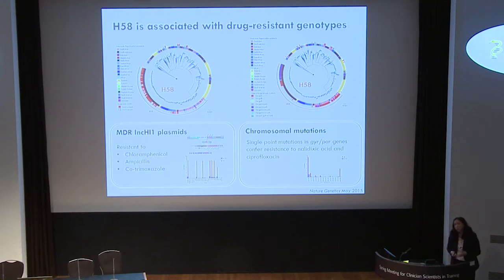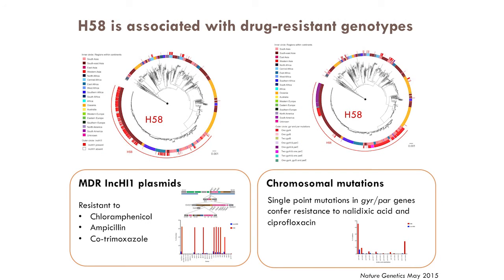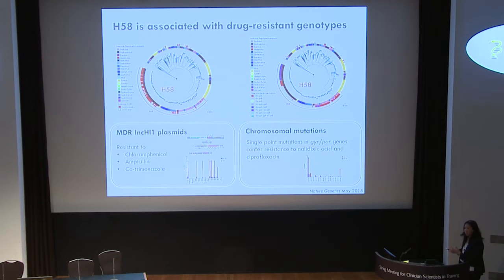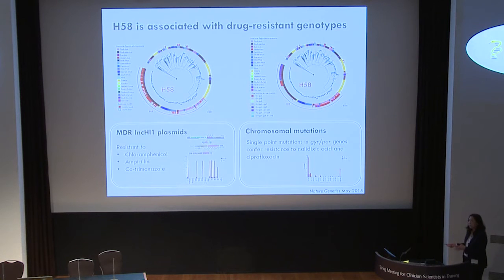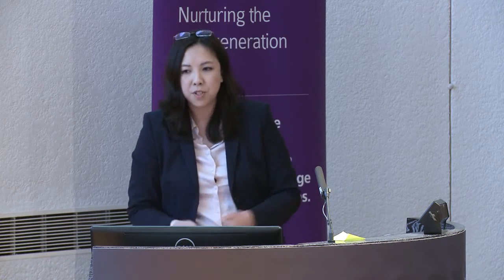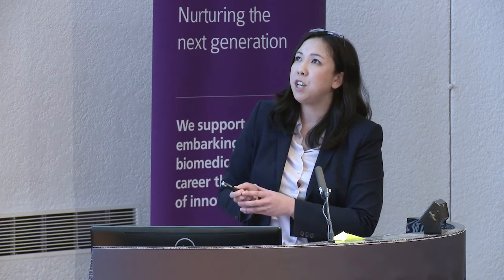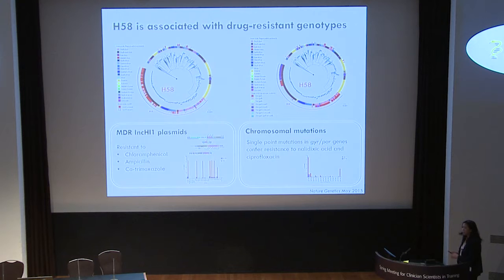There are two main mechanisms of drug resistance in Salmonella typhi. First, they harbour a multi-drug resistant plasmid called INC-HI1, which contains a repertoire of resistance genes on a transposon conferring resistance to chloramphenicol, ampicillin, and cotrimoxazole — the three agents that define the clinical MDR phenotype. The second mechanism is chromosomal mutations — SNP mutations in the gyrase and PAR genes involved in relaxing DNA during replication, giving resistance to quinolones and fluoroquinolones such as ciprofloxacin, levofloxacin, and moxifloxacin. H58 has a higher rate of both these drug-resistant genotypes compared to the rest of the tree.